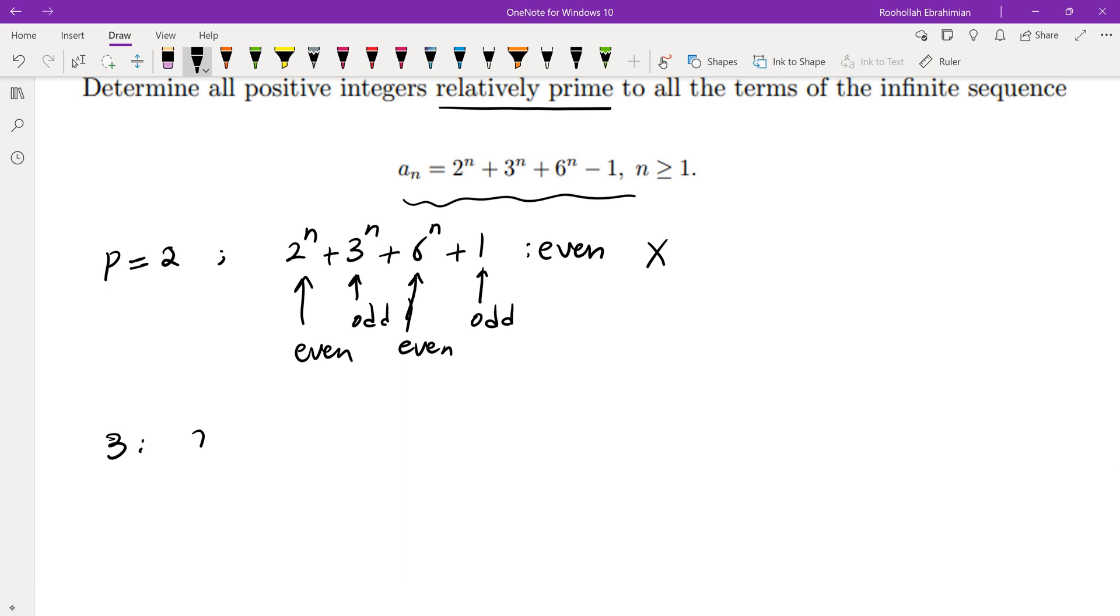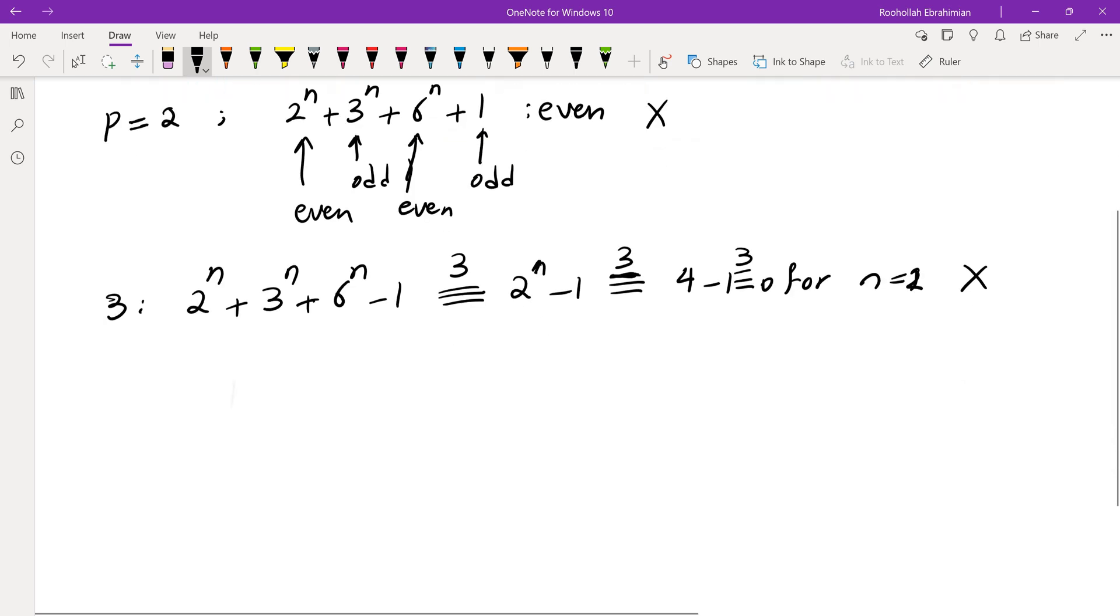If we look at 3, we can look at 2^n plus 3^n plus 6^n minus 1. When we take that mod 3, we get 2^n minus 1, which if we take that mod 3, as soon as n is 2 we get 4 minus 1 for n equals 2, which is just 0 mod 3. So 3 is also not one of those prime numbers.